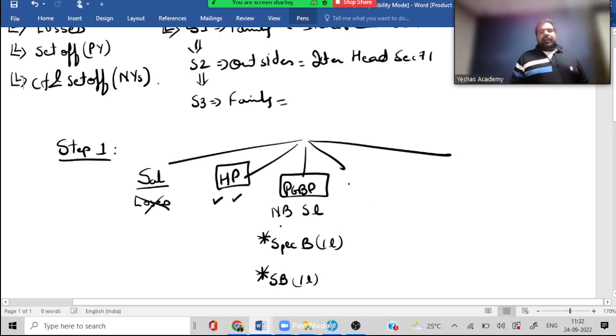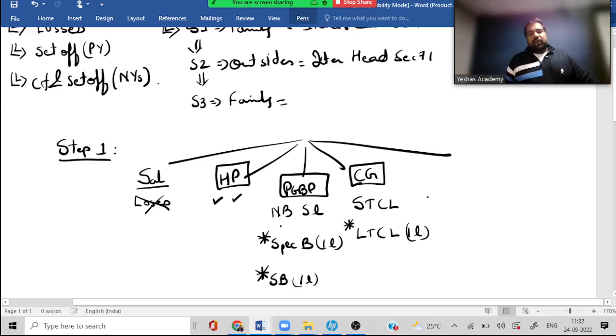Next is capital gain. In capital gain, can you help each other? Yes. There are two kinds: short term capital loss and long term capital loss. Long term capital loss is again unique blood. That means even if there is a loss and a profit here, can I set it off? Unfortunately, no.